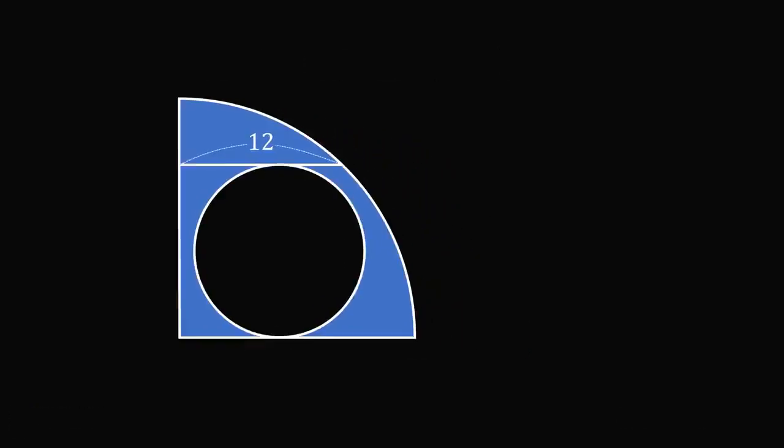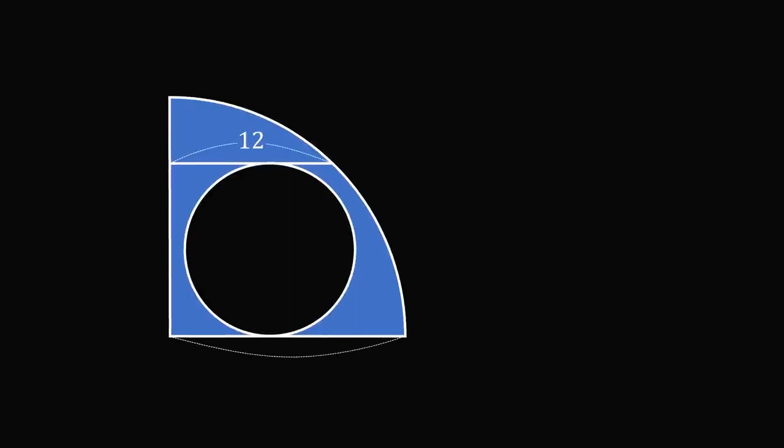Let's suppose the quarter circle has a radius length equal to a and the small circle has a radius length equal to b. Then the diameter of the small circle is equal to 2b, and that's exactly the distance between the center of the quarter circle and the line segment.